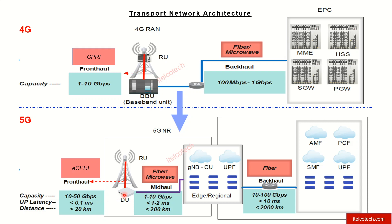Beyond the baseband unit — the distributed unit and the central unit in 5G — there is a new connectivity defined in 5G NR called midhaul. It can be provided using both fiber as well as wireless backhaul through microwave. Compared to fronthaul, the requirement is not as stringent because most real-time sensitive processing has been done in the DU itself. Still, midhaul has quite stringent requirements: up to 10 Gbps data rate and latency of less than 2 milliseconds. The CU and other core network elements can be kept at the edge location, with the distance between DU and CU being less than 200 kilometers.